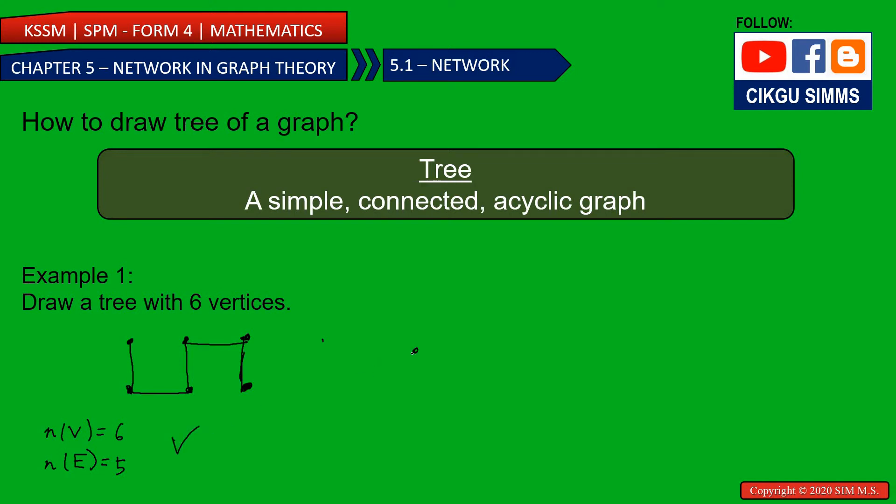Also, it can have other forms like this: 1, 2, 3, 4, 5, 6. I have 6 vertices. I need to draw 5 lines: 1, 2, 3, 4, 5.